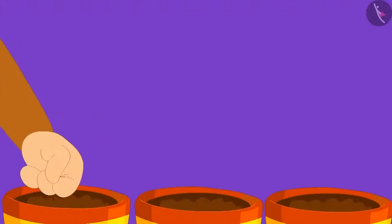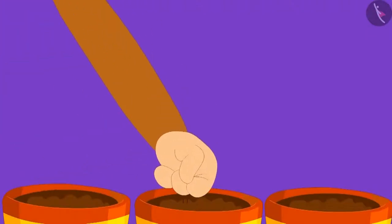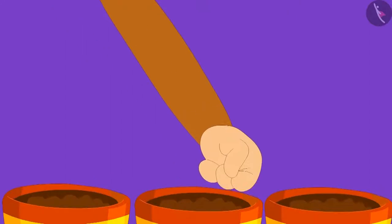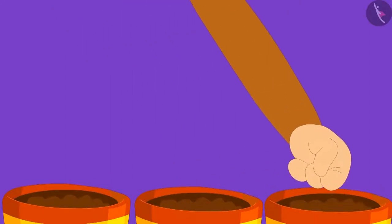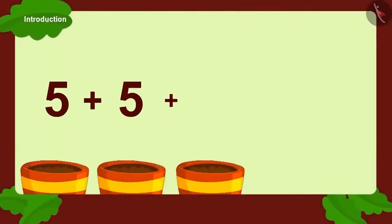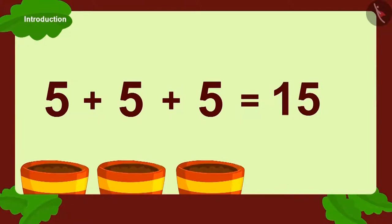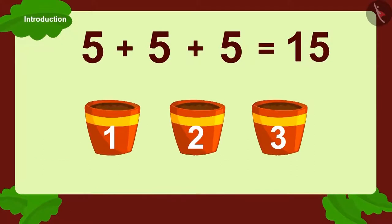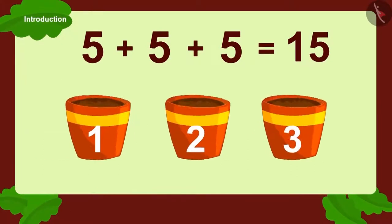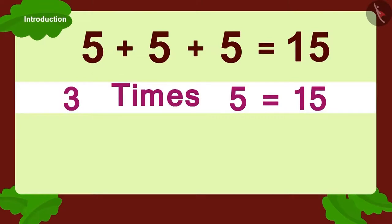Babban planted five seeds each in three pots. Can you tell how many seeds did Babban plant in total? Five plus five plus five. Babban planted fifteen seeds in total. How can we write it in a different form? Three times five.